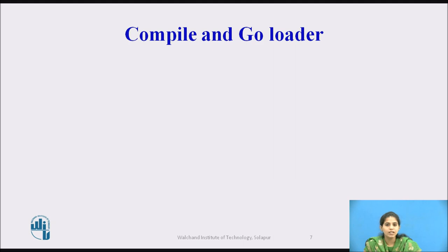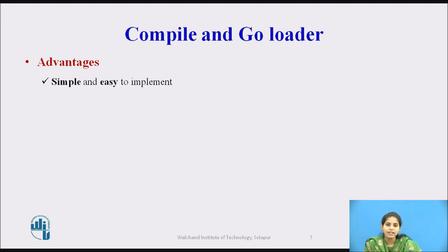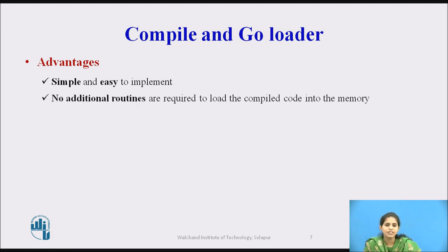Now next we see the compile and go loader advantages. First, the compile and go loader is simple and easy to implement because the assembler is placed at one part of the memory and the loader simply loads the assembled machine instructions into the memory. The second advantage is that no additional routines are required to load the compiled code into the memory.